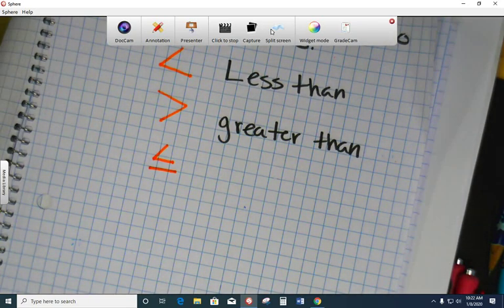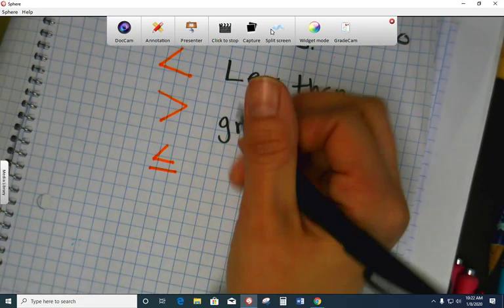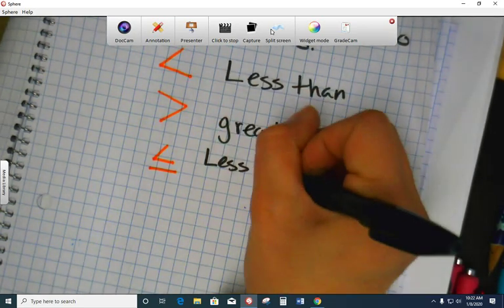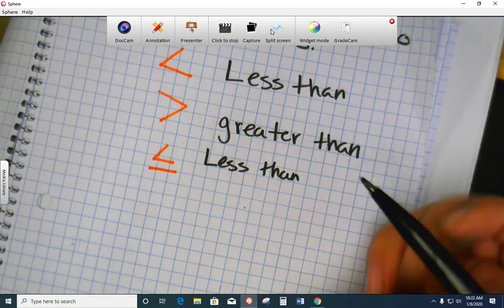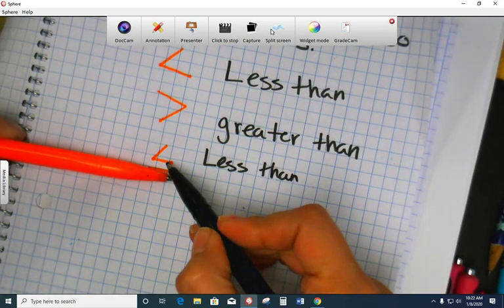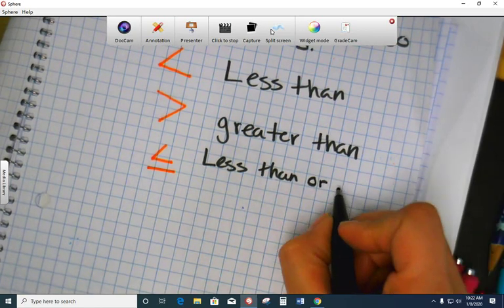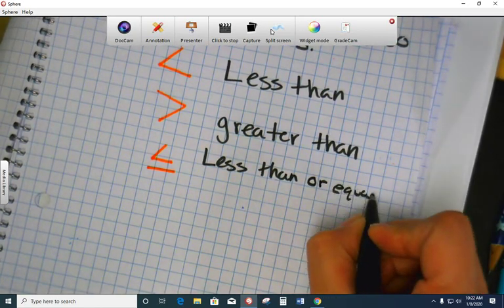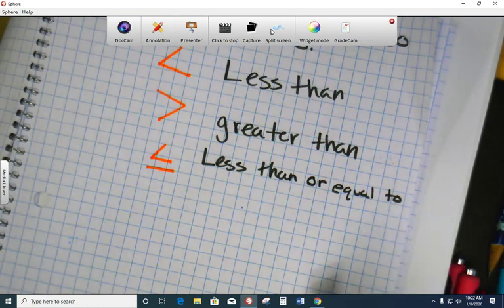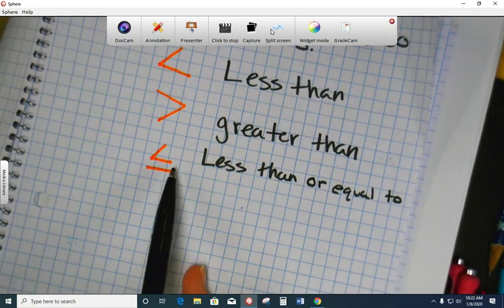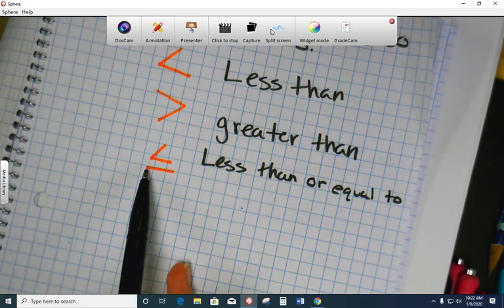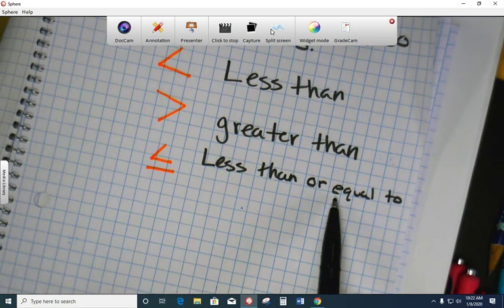Less than or equal to. Wait, sorry, I didn't process that. Say that one more time. Less than or equal to. Very good. Less than, right, because that part right there is a less than symbol or equal to. Why do we say equal to? This line right here is like half an equal sign. So that's where we get the equal to part.